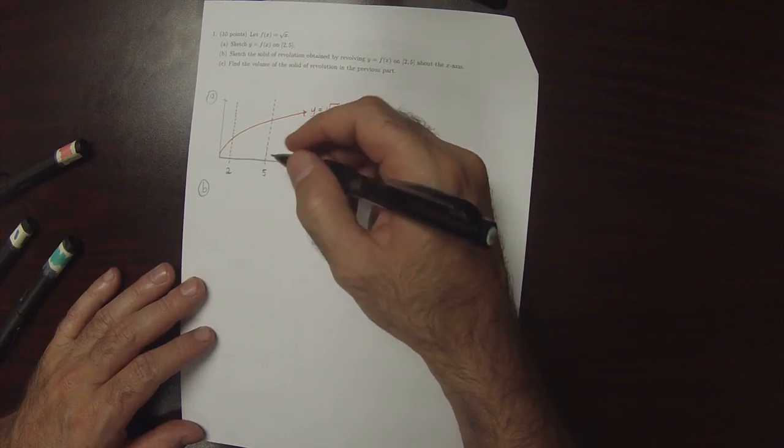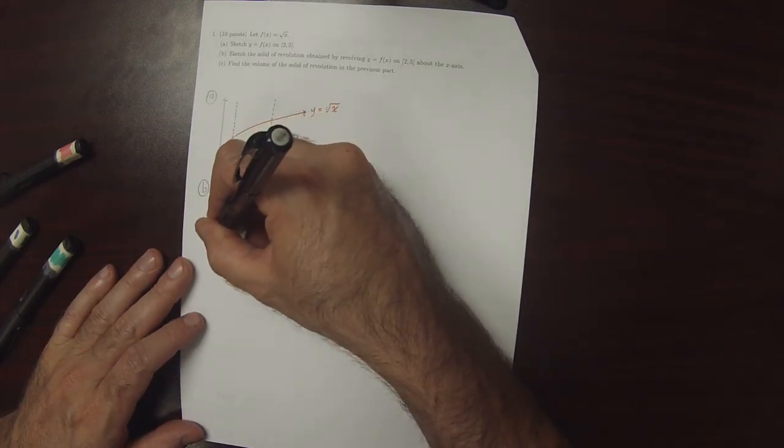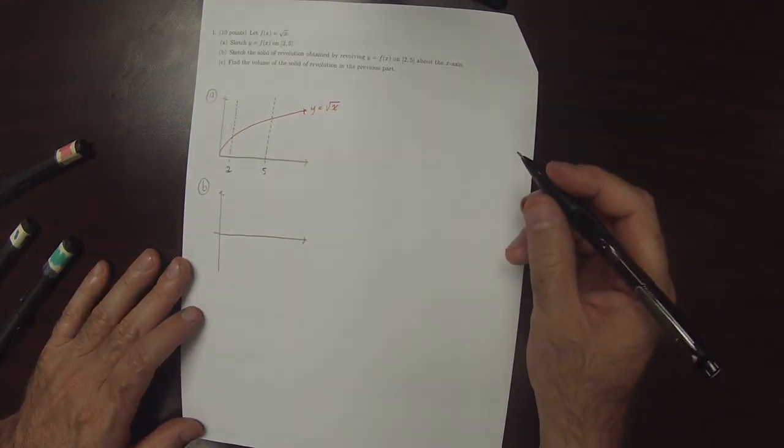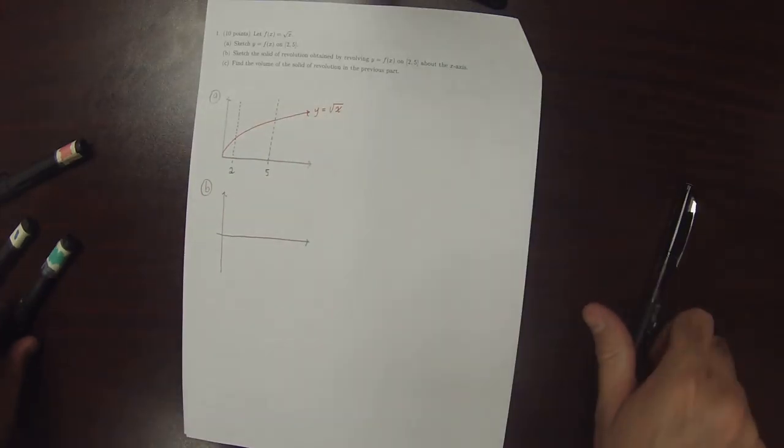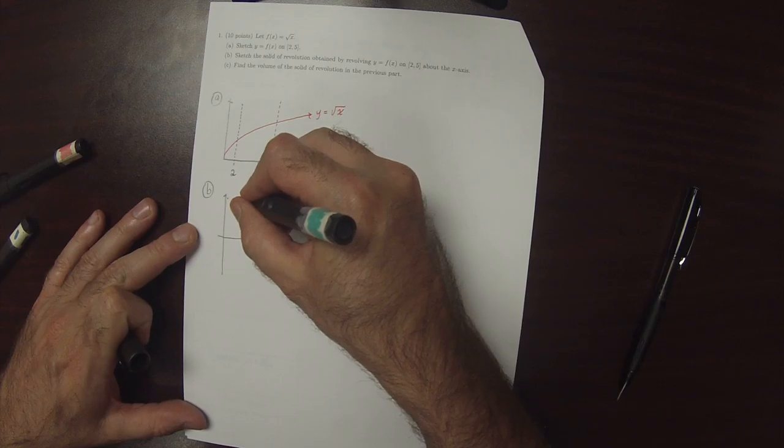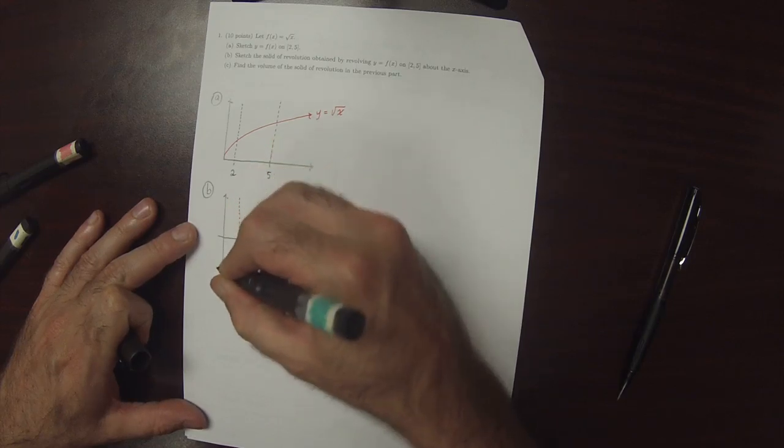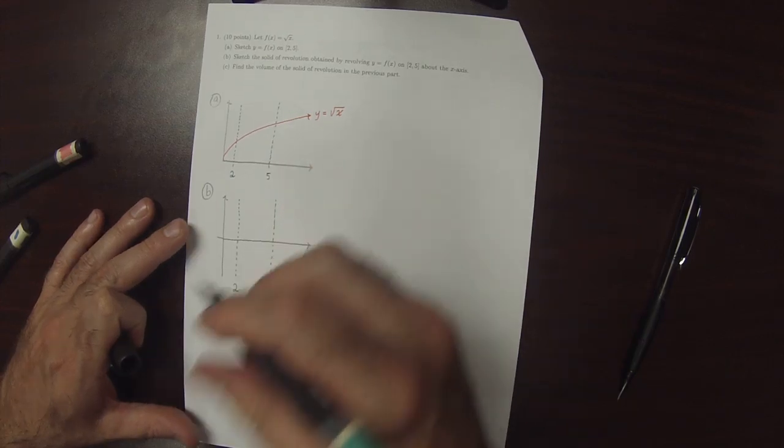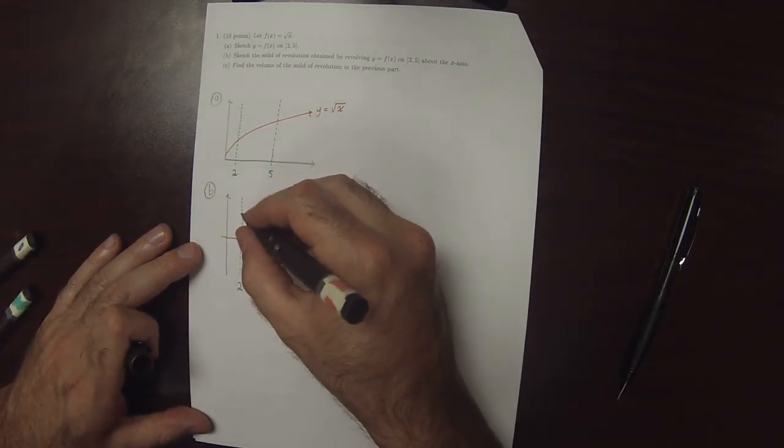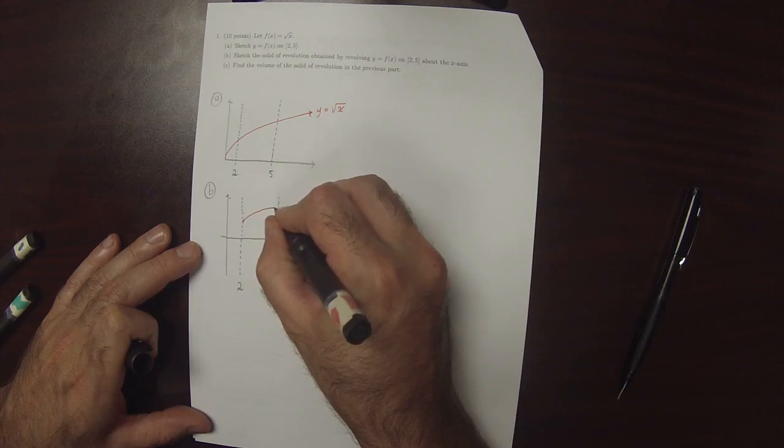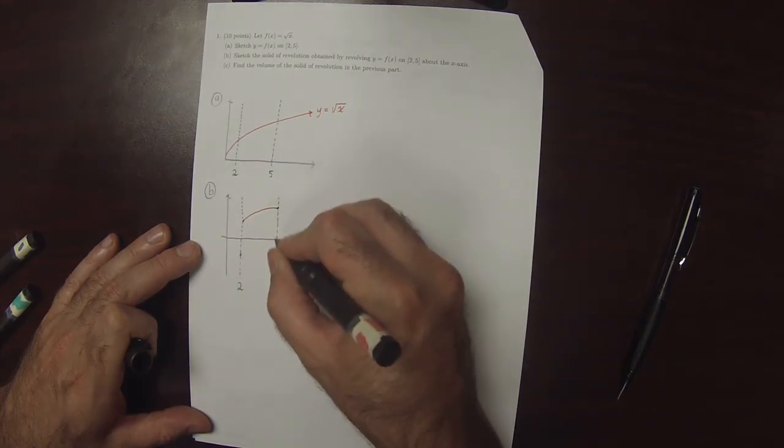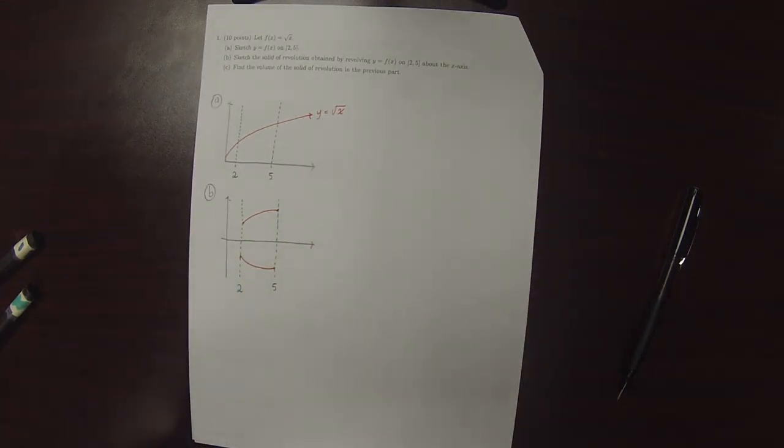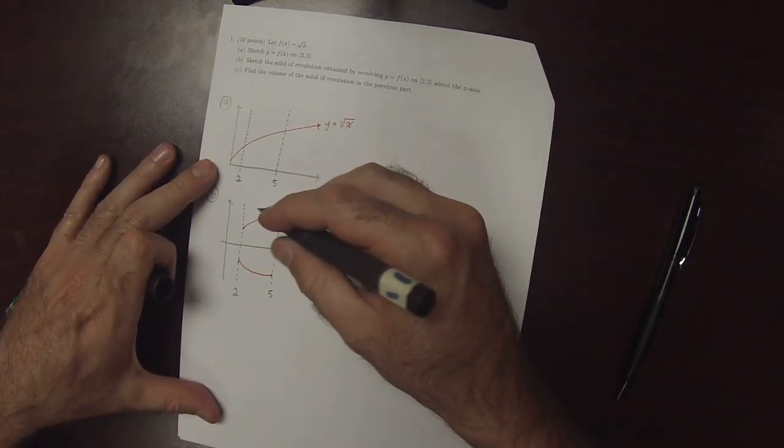We're requested now to revolve that around the axis. So the picture now looks like... So something like that. And then my attempt to make it look three-dimensional.